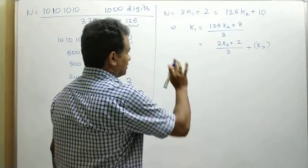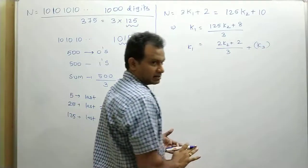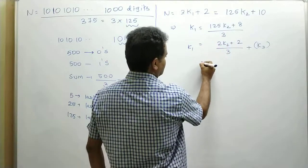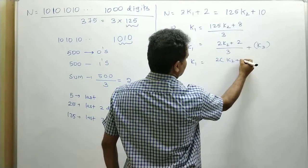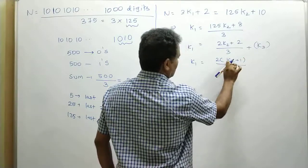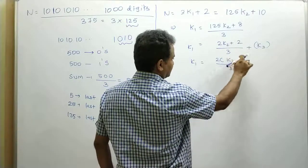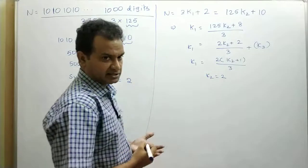Now k₁ should be this fraction part plus some integer part. So for what value of k₂ will this expression give you an integer? This is very easy to find because if you take 2 common, which will give you k₂ plus 1 divided by 3. Now for k₂ equal to 2, this expression is exactly divisible by 3. Therefore, for k₂ equal to 2, we will get an integer here.